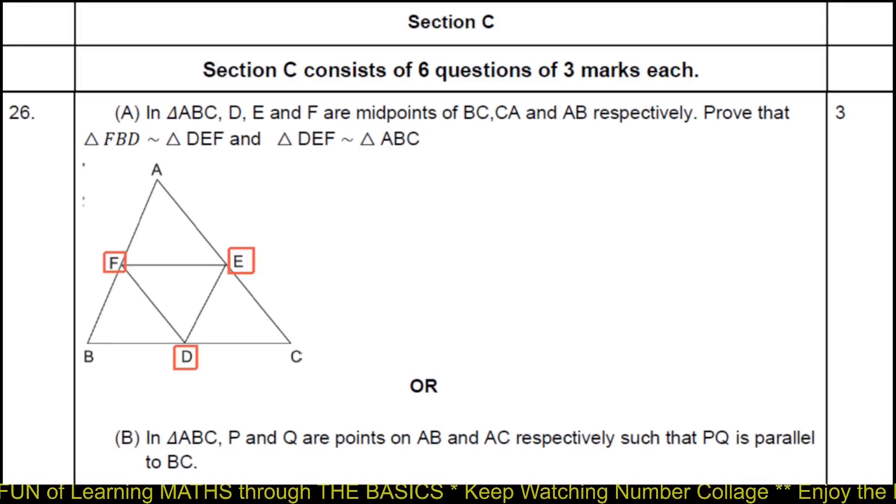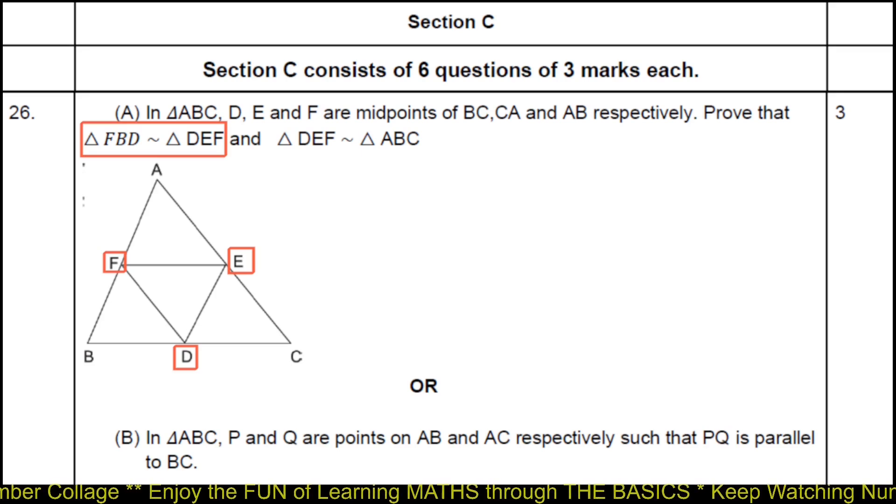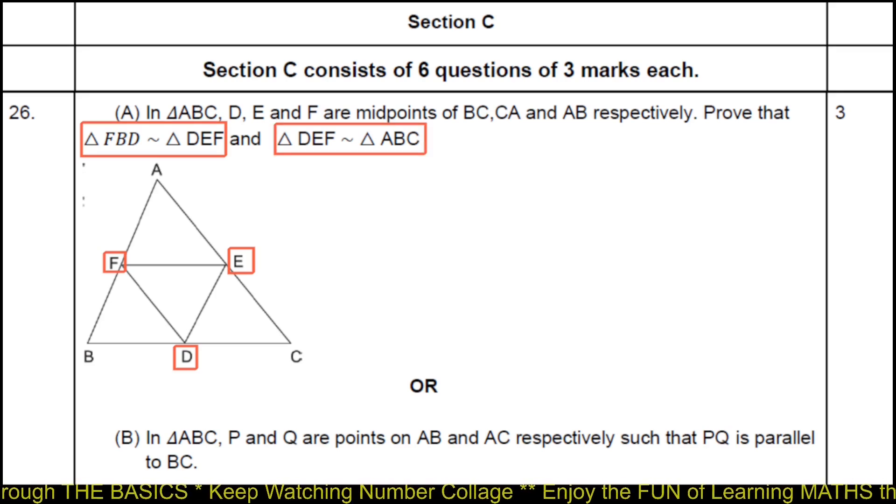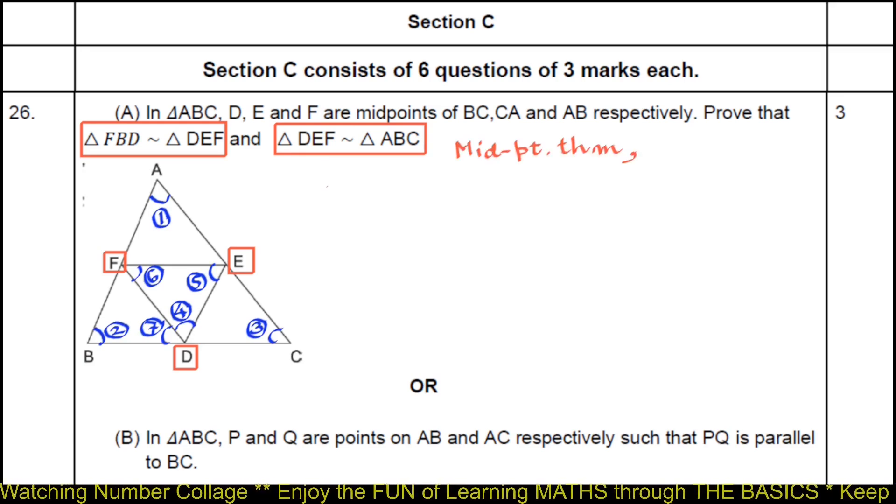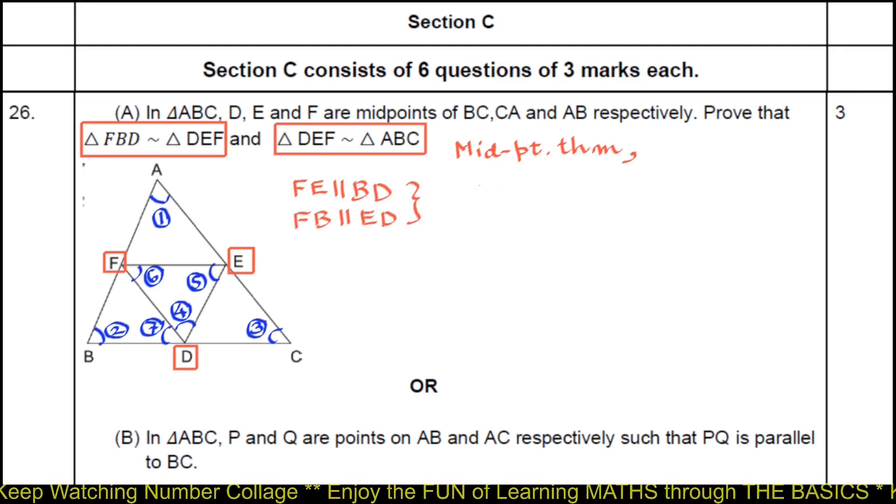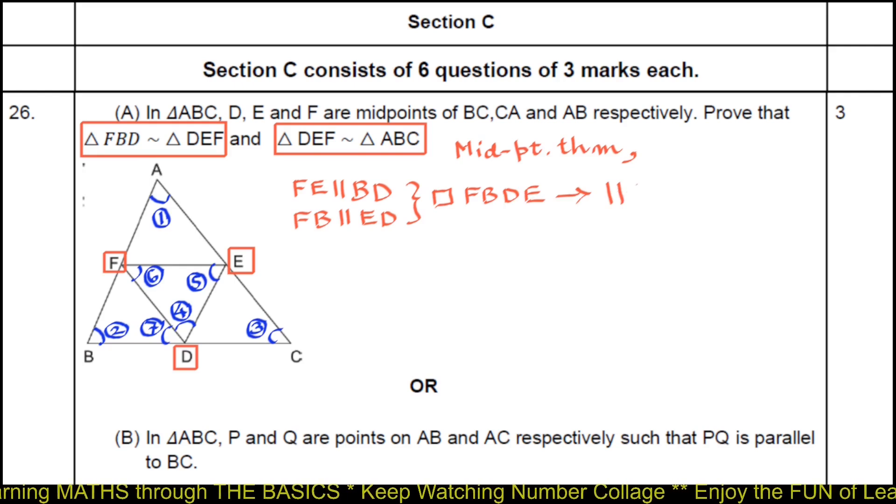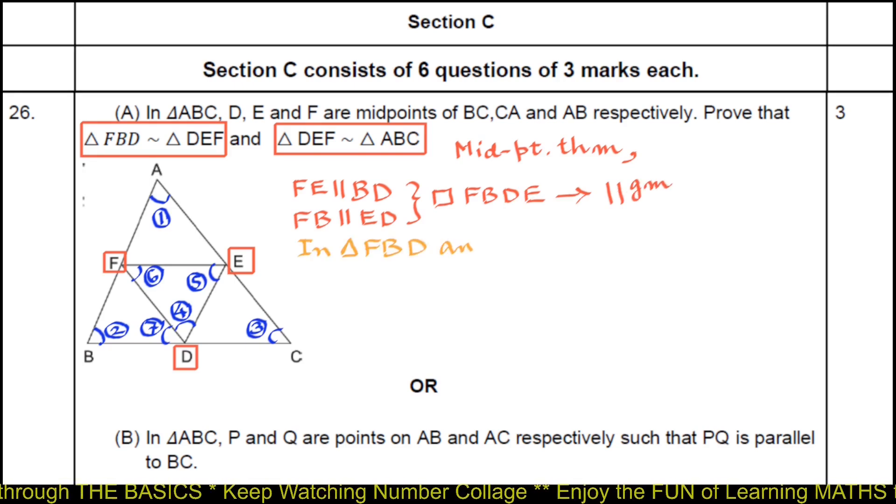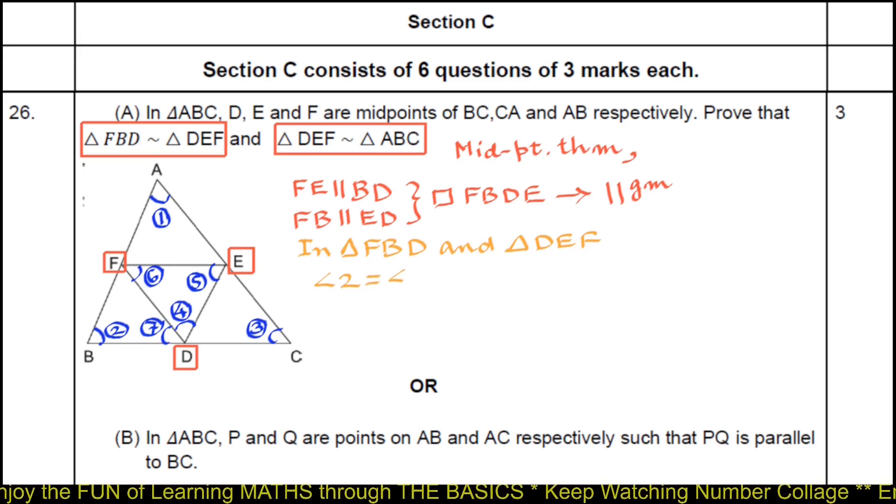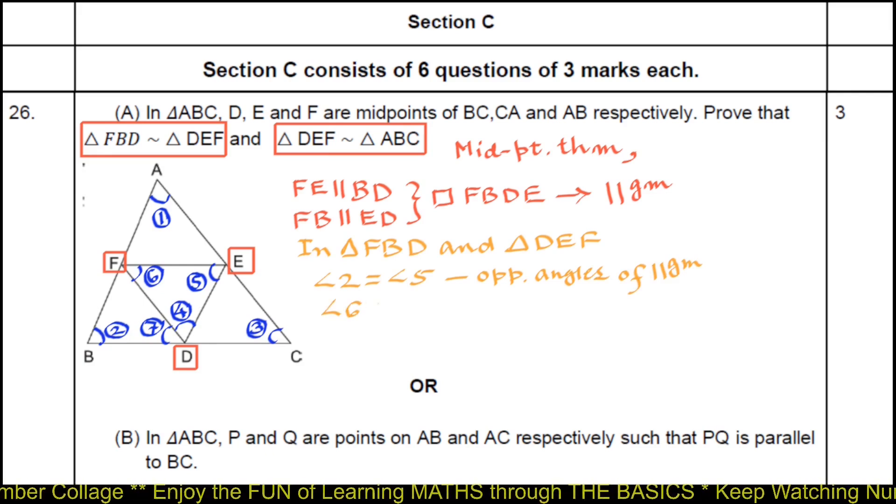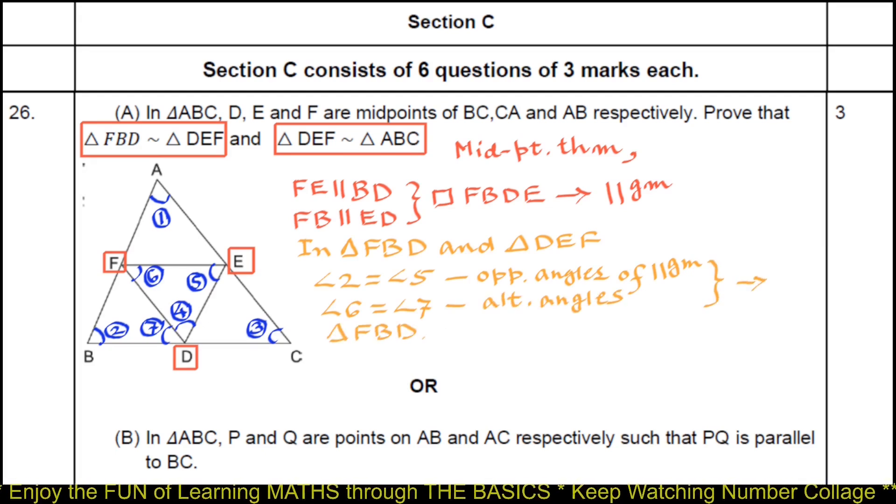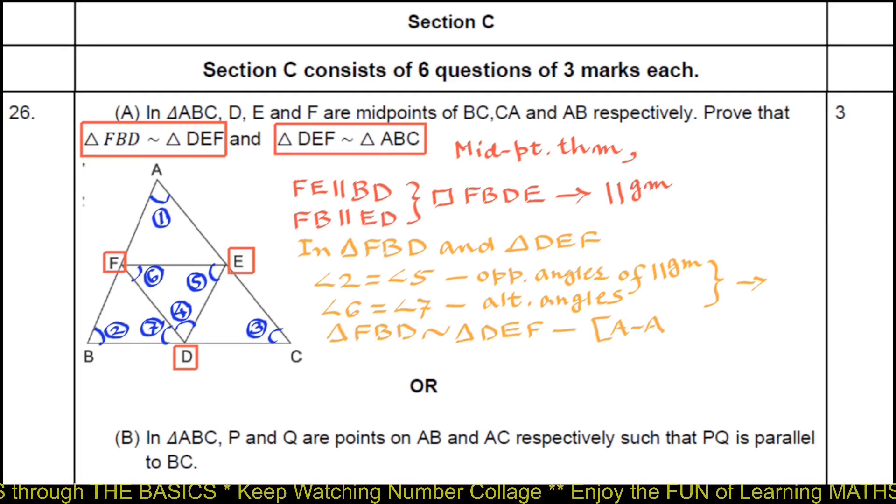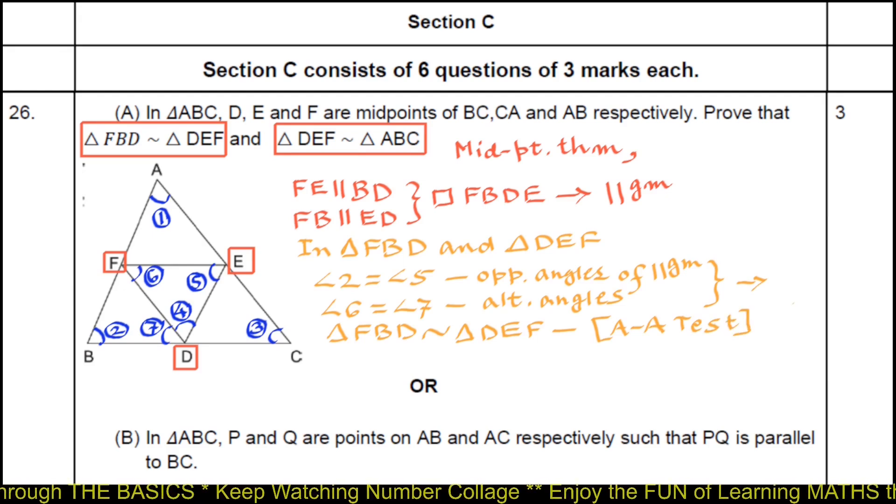D, E, F are midpoints of respective sides of triangle ABC. We have to prove triangle FBD similar triangle DEF and triangle DEF similar triangle ABC. First, we will give numbers to some relevant angles which we are going to use. By midpoint theorem, FE parallel BD and FB parallel ED, that makes quadrilateral FBDE a parallelogram. In triangle FBD and triangle DEF, angle 2 equals angle 5, opposite angles of parallelogram which are equal, angle 6 equals angle 7, interior alternate angles, from which triangle FBD becomes similar triangle DEF by AA similarity criteria or AA test. So the first part is proved.